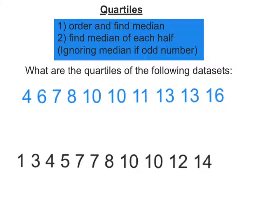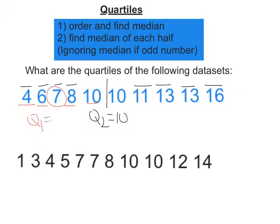Let's keep going with these two examples. So we've got 4, 16, 6, 13, 7 and 13, 8 and 11. We've got two numbers, so Q2 is 10. Let's work out the median of each half. So we've got 4 and 10, 6 and 8, so it's 7. So Q1, the lower quartile, is 7. Then 10, 16, 11, 13 — so Q3, the upper quartile, is 13.